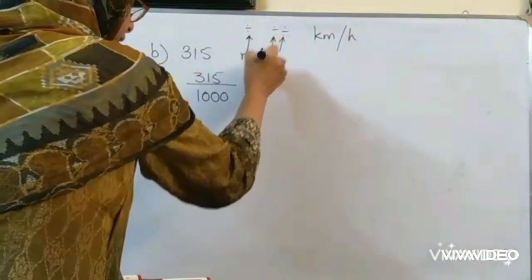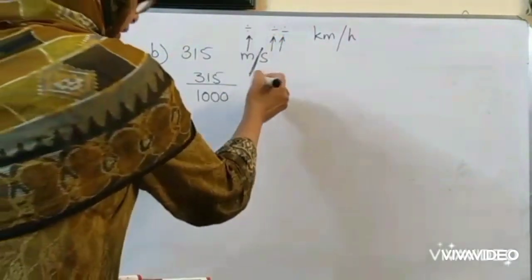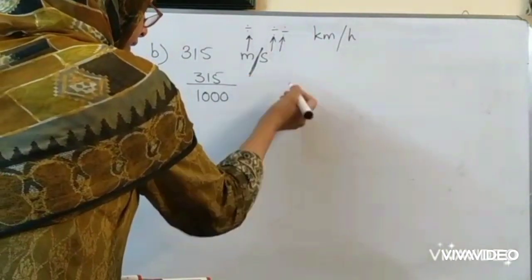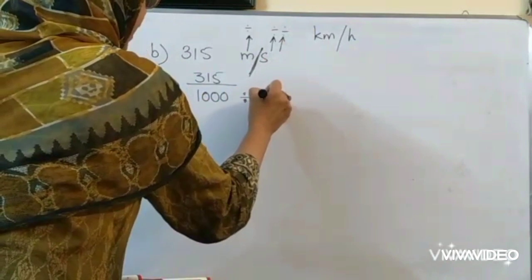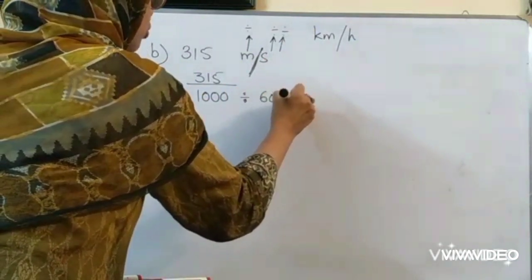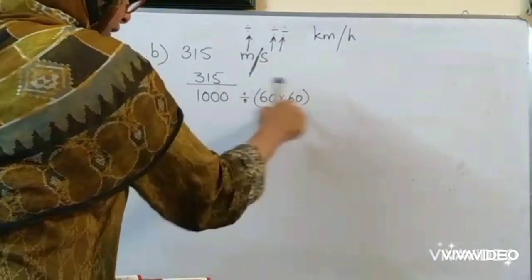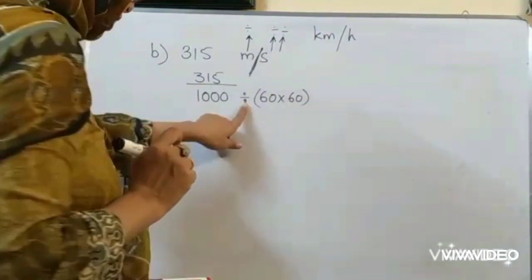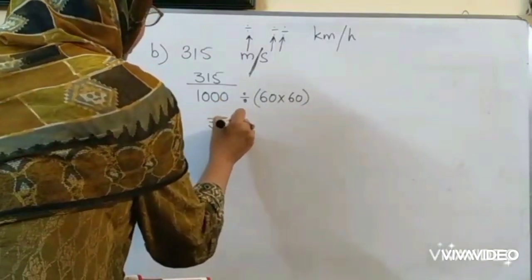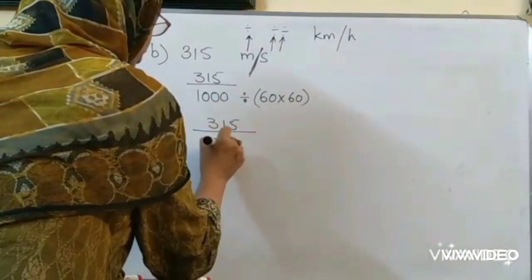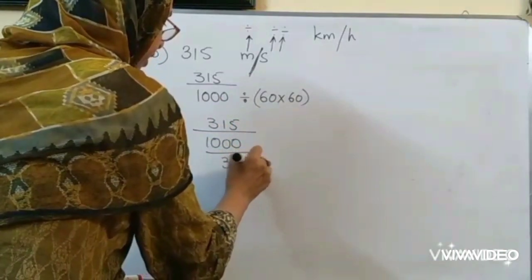And look at this bar. This bar. It is already in the denominator. It is already here in the denominator. But we have to do double division. So, we will be writing dividing by 60 into 60 minutes and seconds. So, it will be written like this. Now, this division means these two numbers will come like 315 over 1000 over 3600.